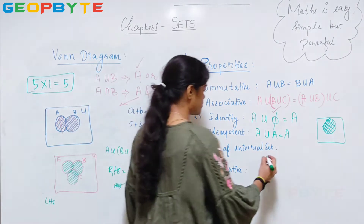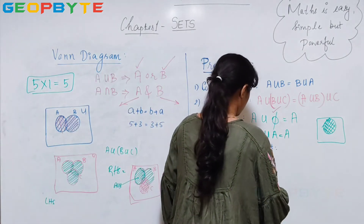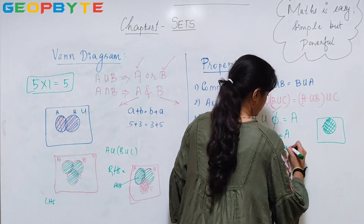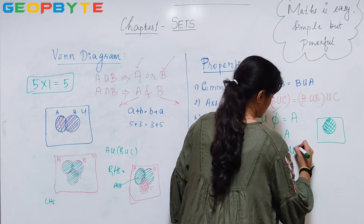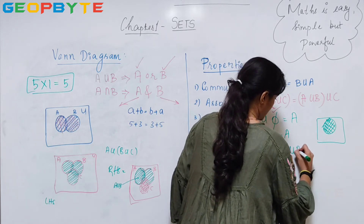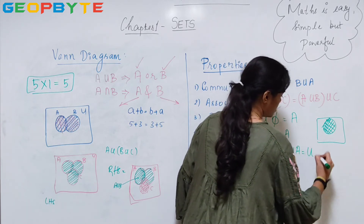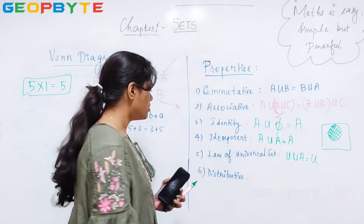Now coming to the fifth one: the universal set union A is equal to the universal set.